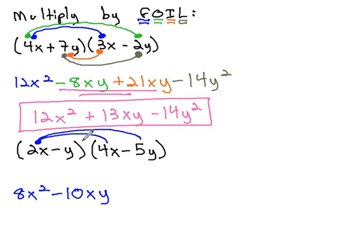We then can move to distributing the next term through. Negative y times 4x is negative 4xy. Continuing to distribute, negative y times negative 5y is positive 5y squared.